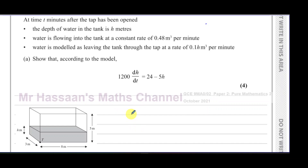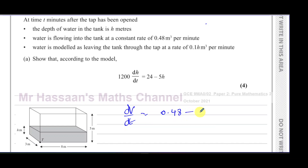We've been told about the rate of change of the volume of water in the tank. Water going in is 0.48 meters cubed per minute (positive), and water leaving is 0.1h meters cubed per minute (negative). The net rate of change of volume is dV/dt = 0.48 − 0.1h — the difference between what's going in and coming out.